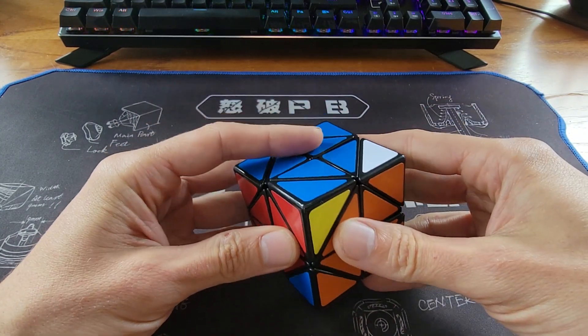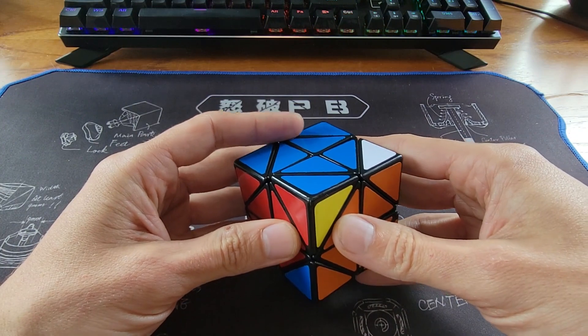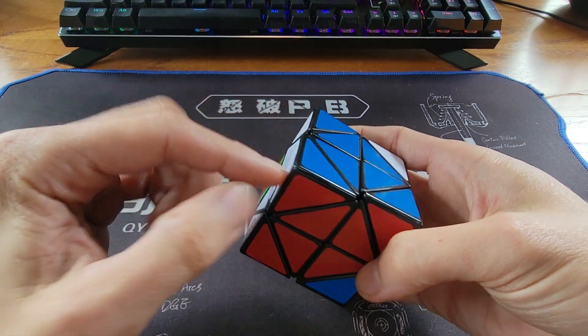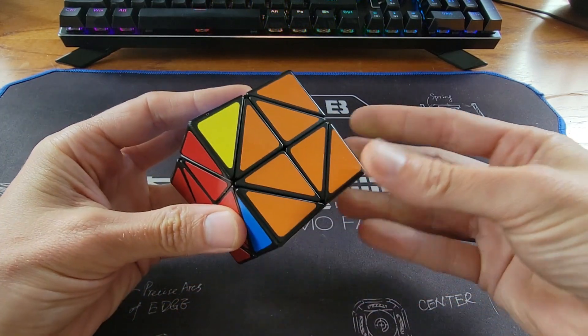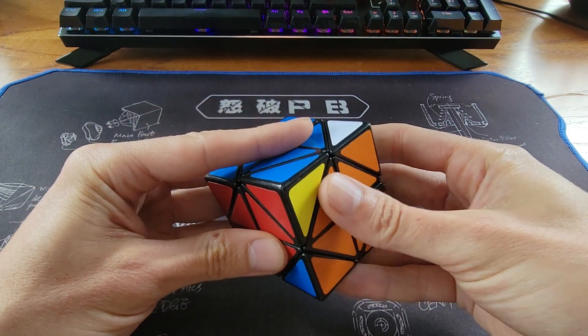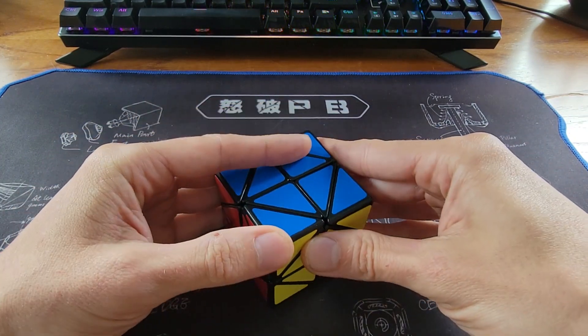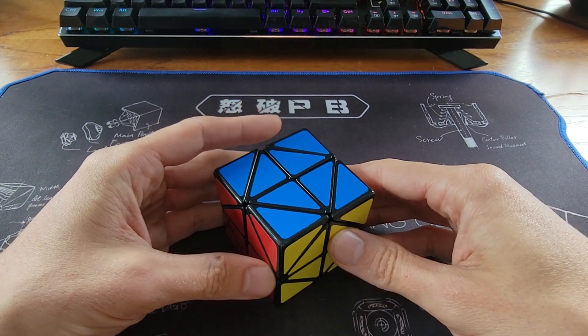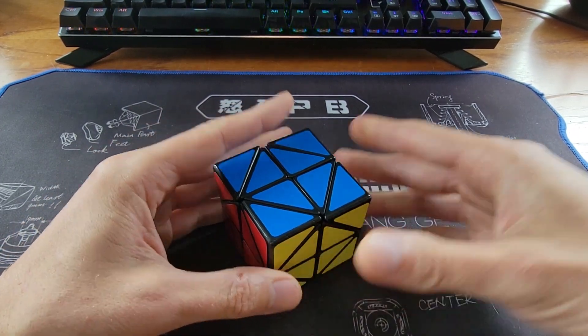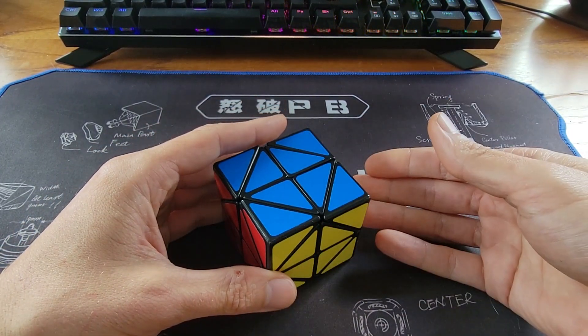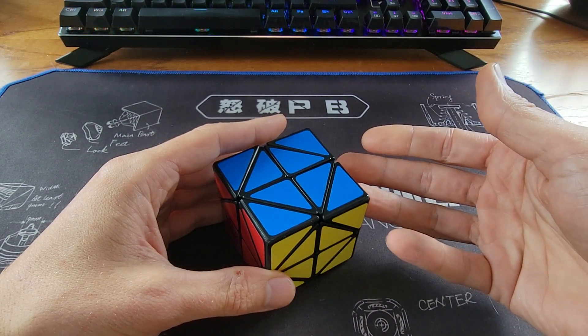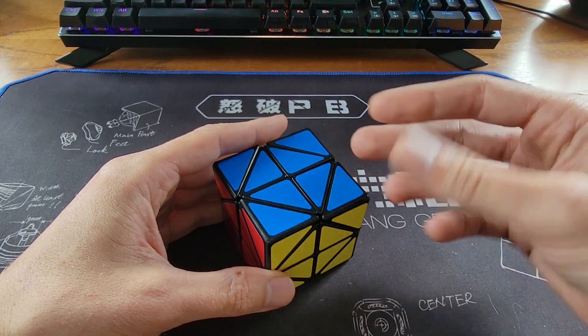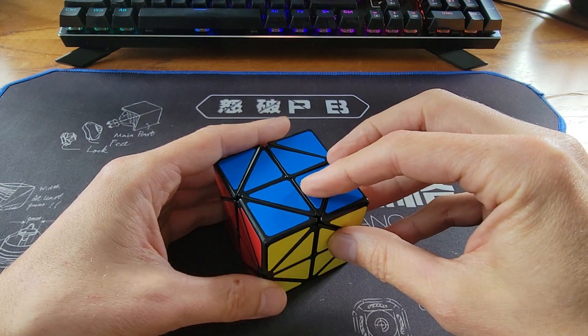When you make a skewed move, there are two unaffected 2x2 corner blocks. That's this block over here and this block over here. Those two blocks won't be affected when you're making skewed moves. So use your combination of skewed move, 2x2 moves, and then undo your skewed move and reduce these 2x2 corner blocks.